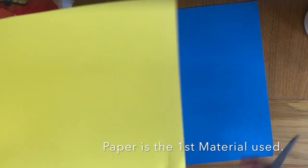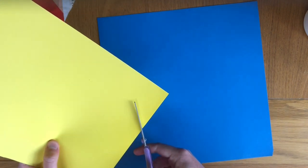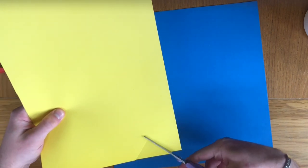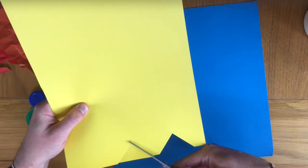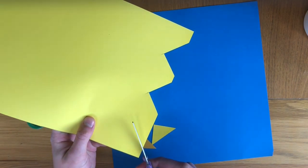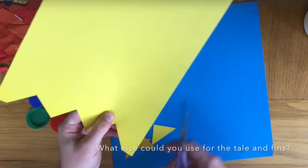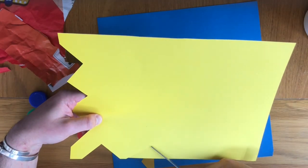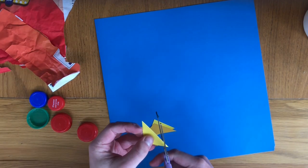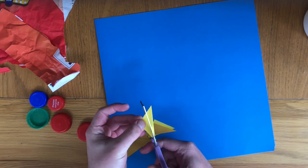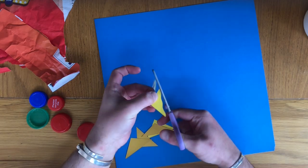We're going to start by cutting out some triangle shapes for the tails of the fish. I'm just going to cut some triangles out from a different colored paper. You don't have to use yellow, and if you want you can shape the triangles as well.